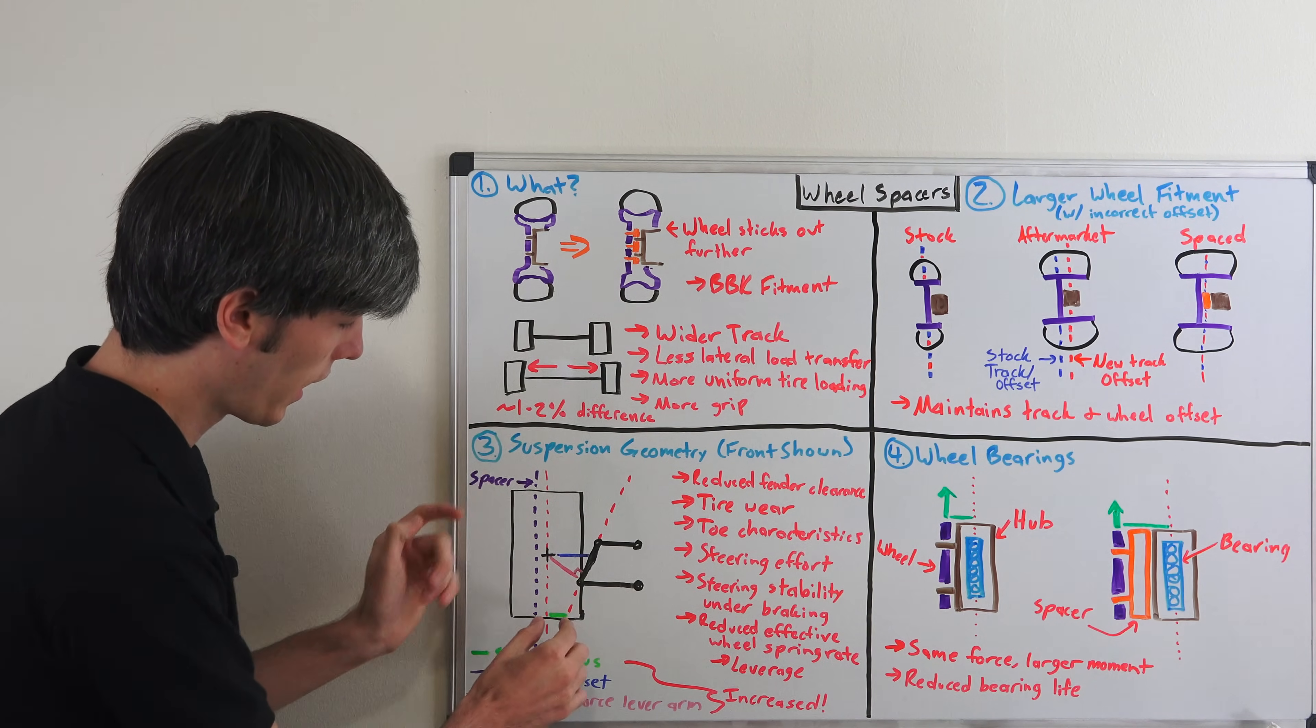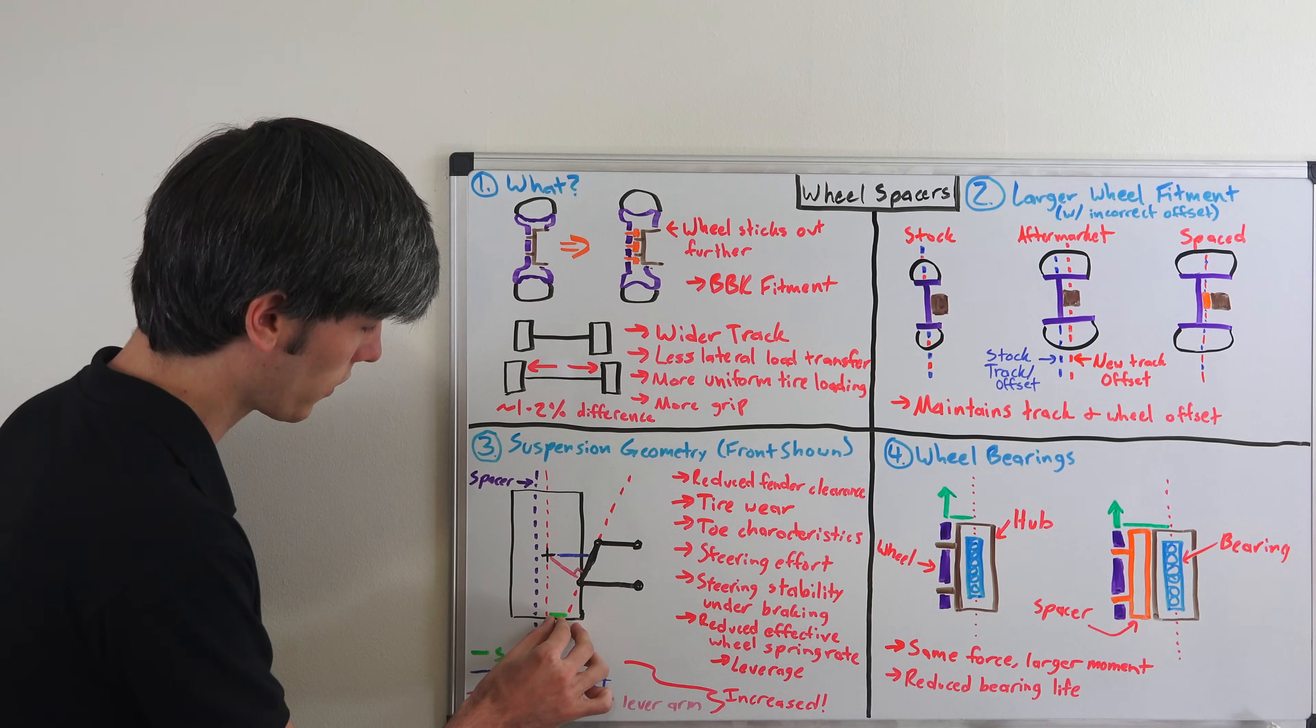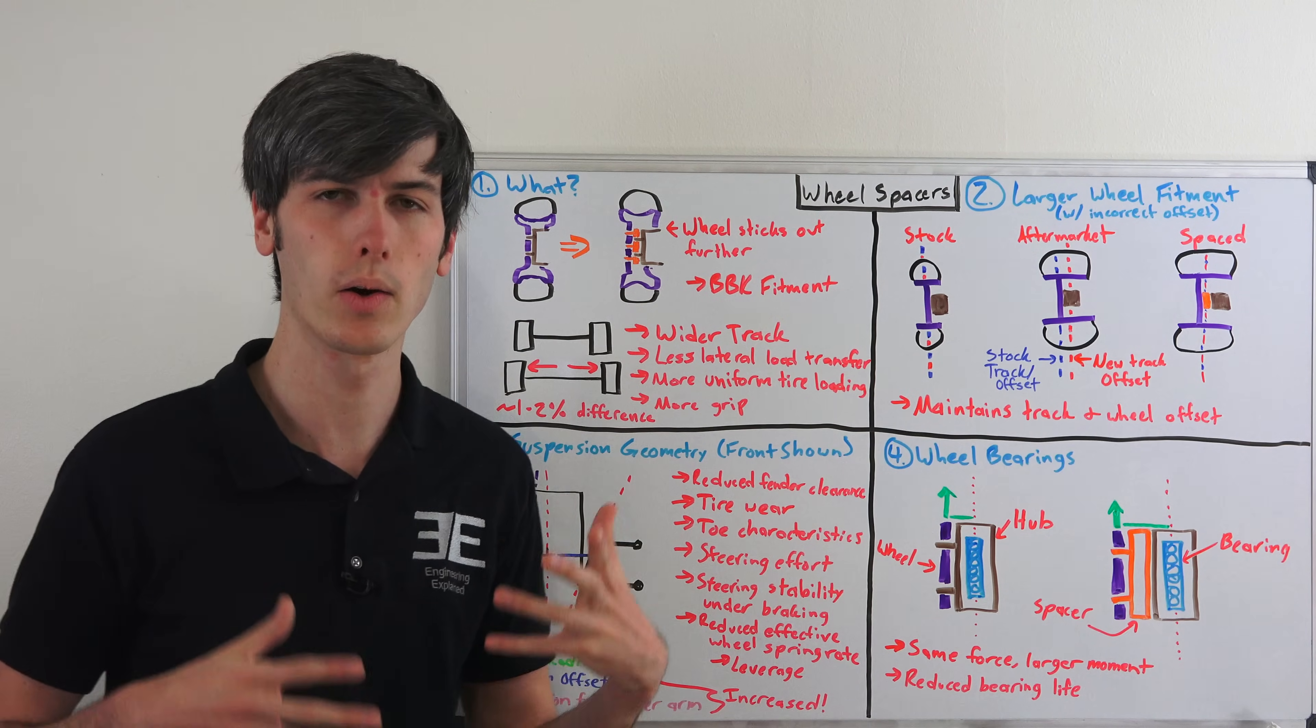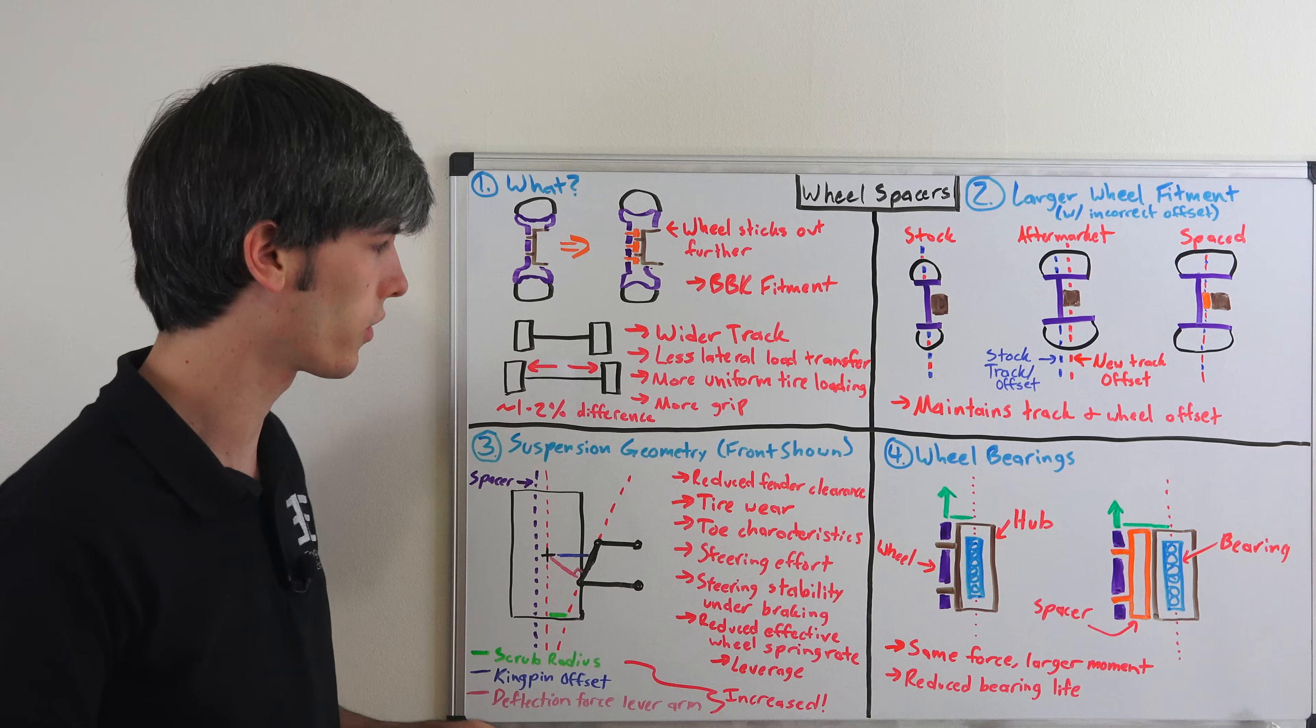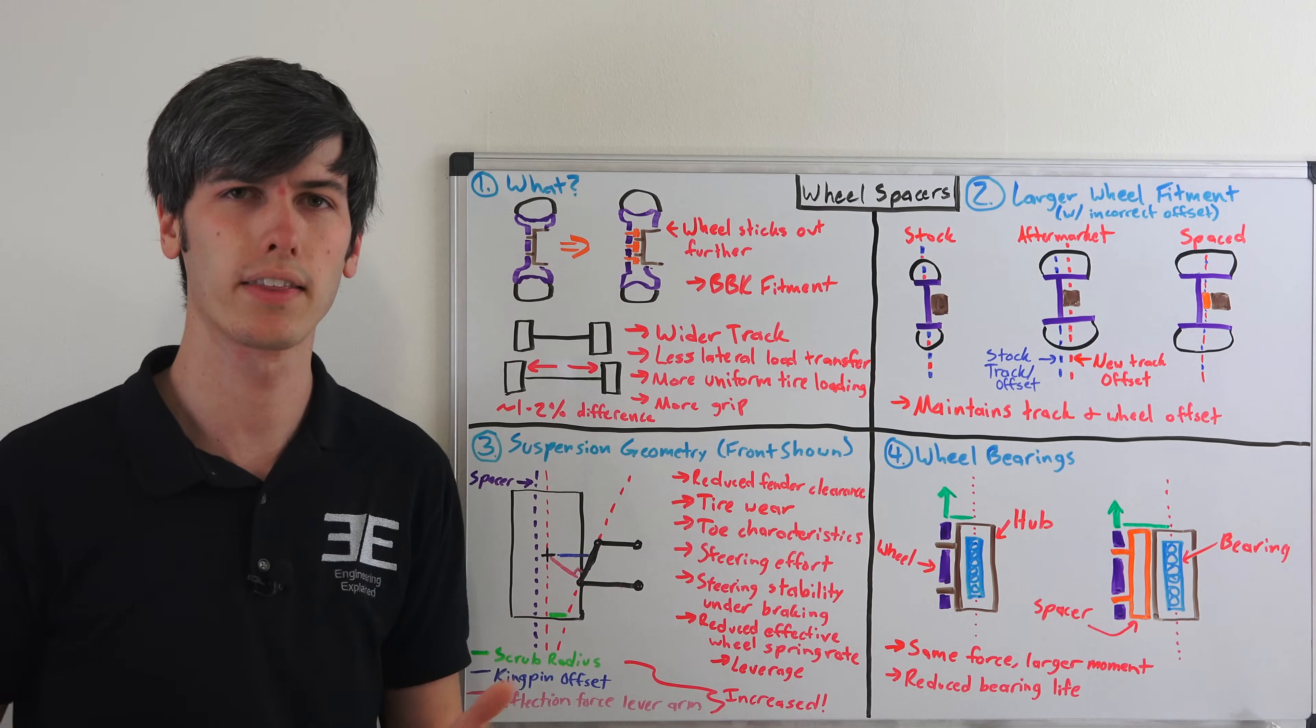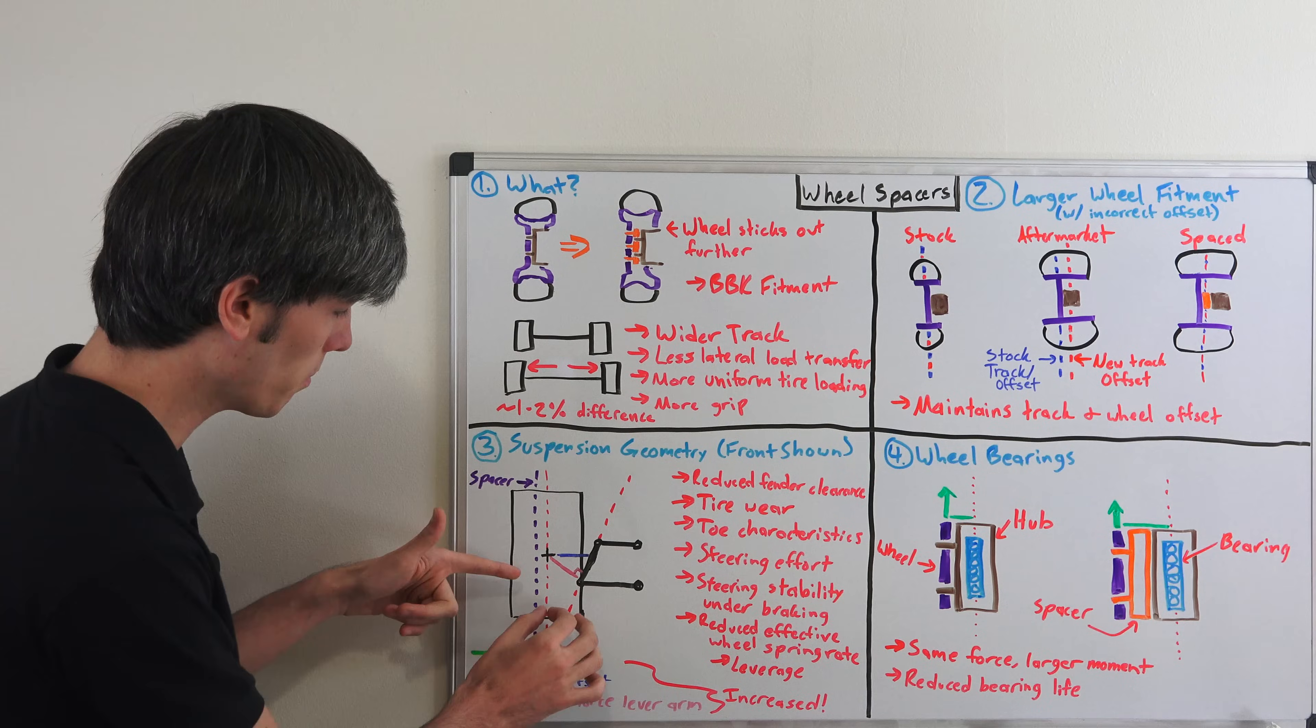We've got our kingpin axis and of course where those, the distance between those is the scrub radius. Now I have a separate video explaining scrub radius in more detail. So you may want to check that out. I'll include a link in the video description.